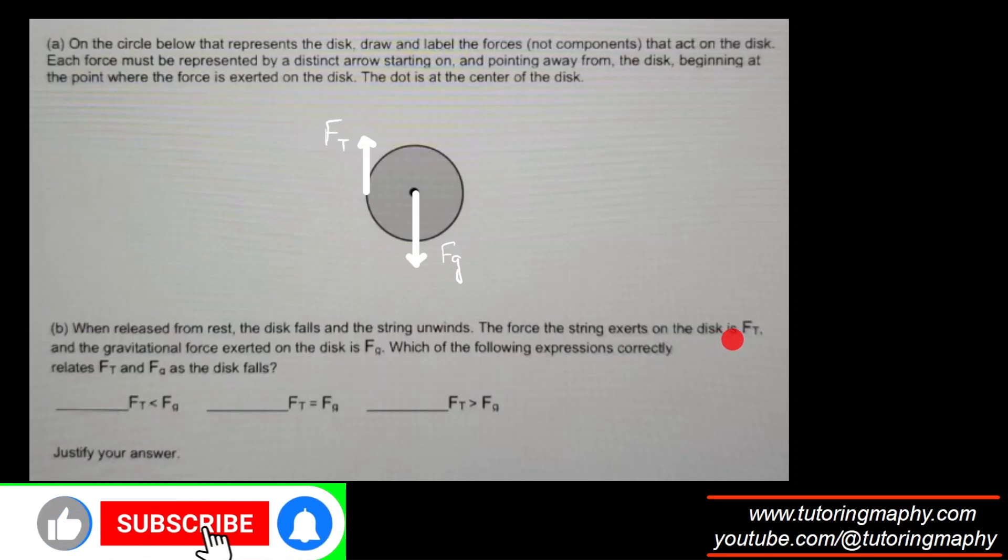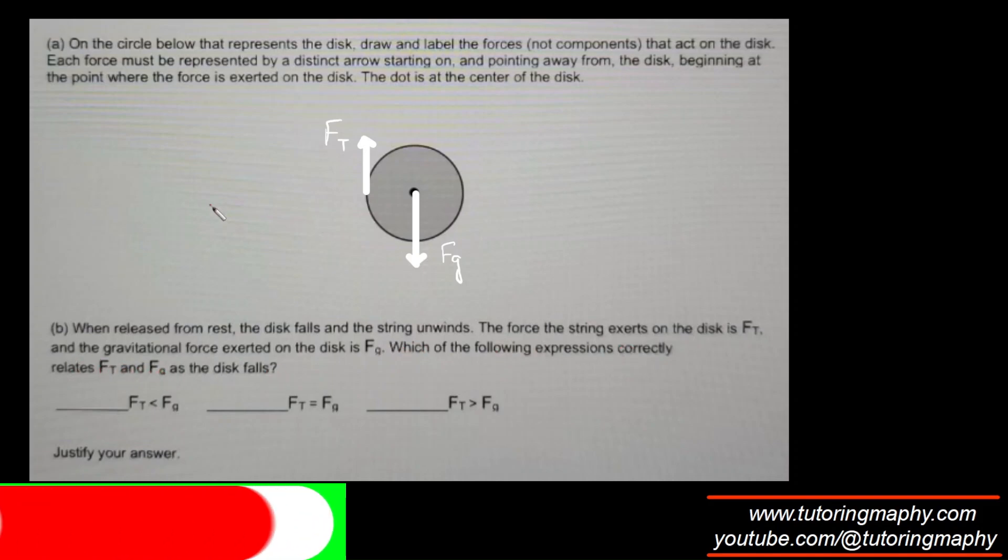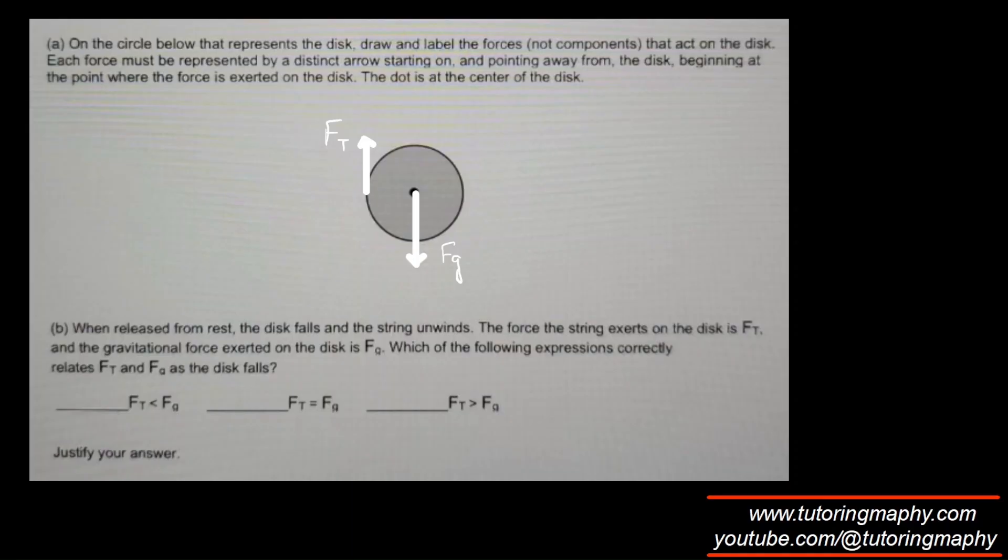Now they are saying that the tension is FT, gravitation is FG. Which of the following correctly relates FT and FG as the disk falls? That's pretty straightforward. Obviously if it is falling, the acceleration is downwards, which means that FG minus FT must be positive, which means that FG must be greater than FT.